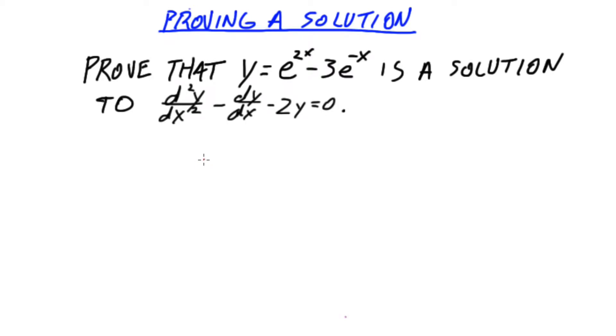Proving a solution. Prove that y equals e to the 2x minus 3e to the negative x is a solution to y double prime minus y prime minus 2y equals 0.